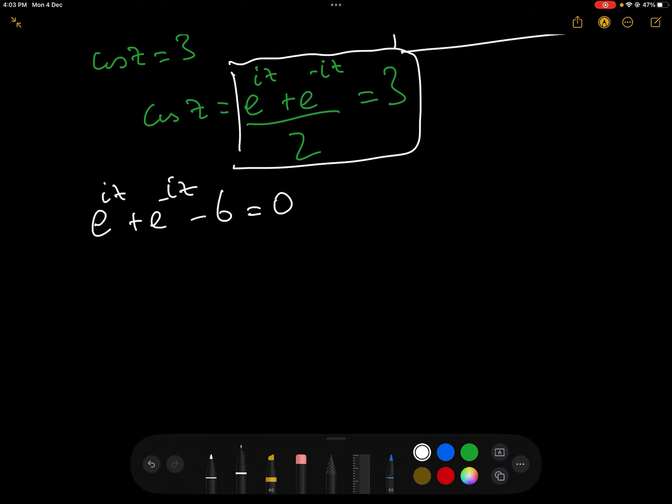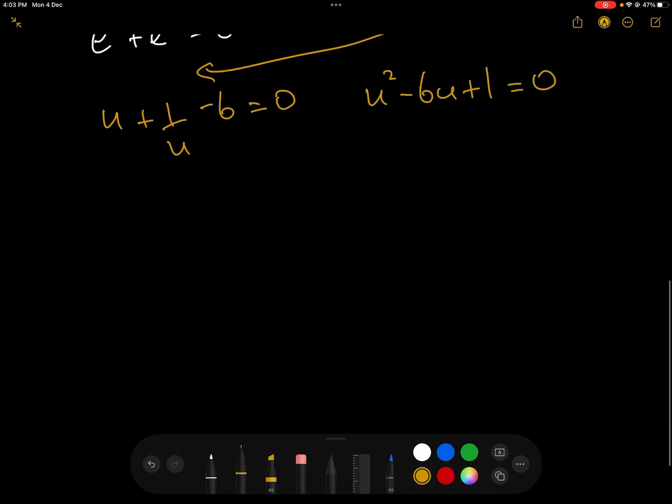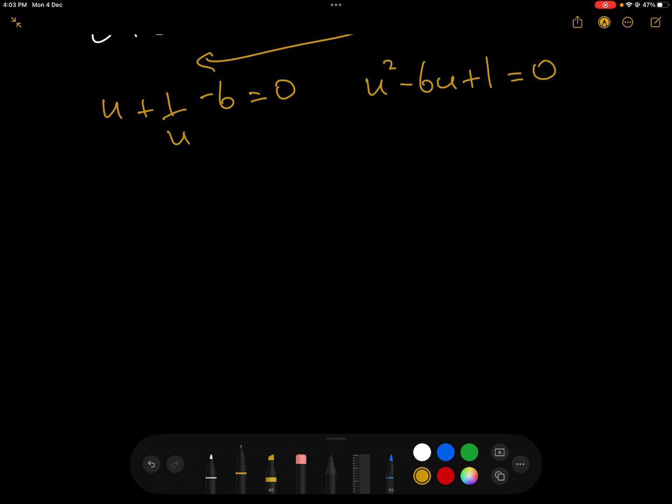Just for ease, let's let u = e^(iz). And then we have here, replacing and substituting, we have u + 1/u - 6 = 0. Multiplying everything by u, we have u² - 6u + 1 = 0, which is a quadratic that we can now solve.